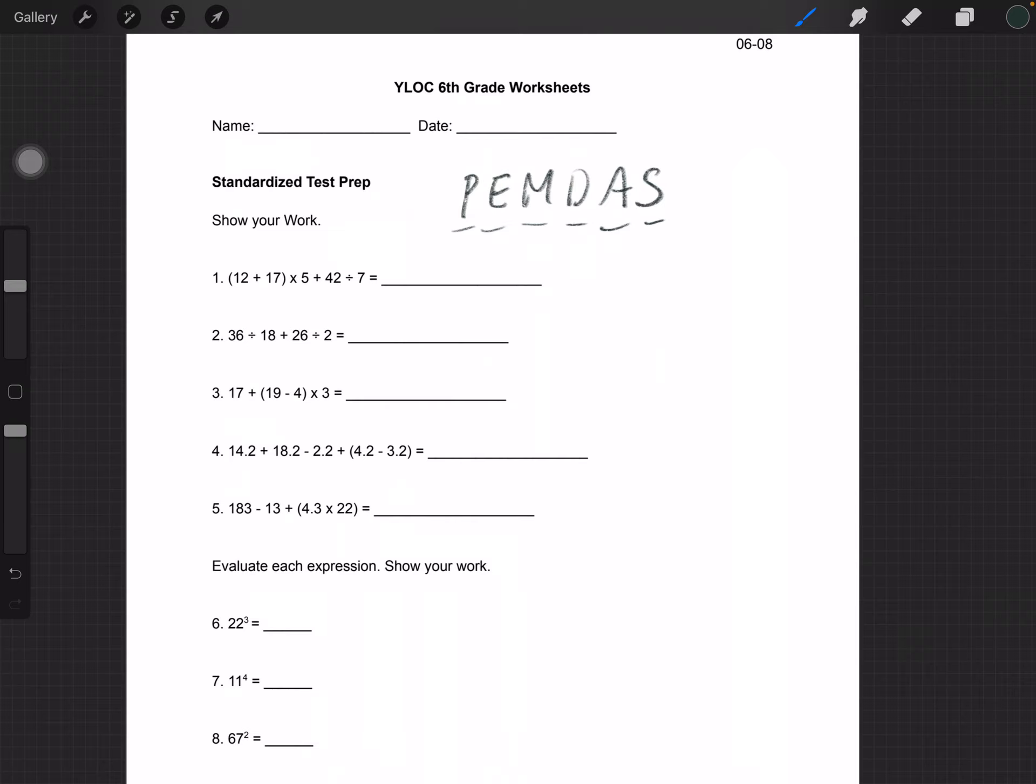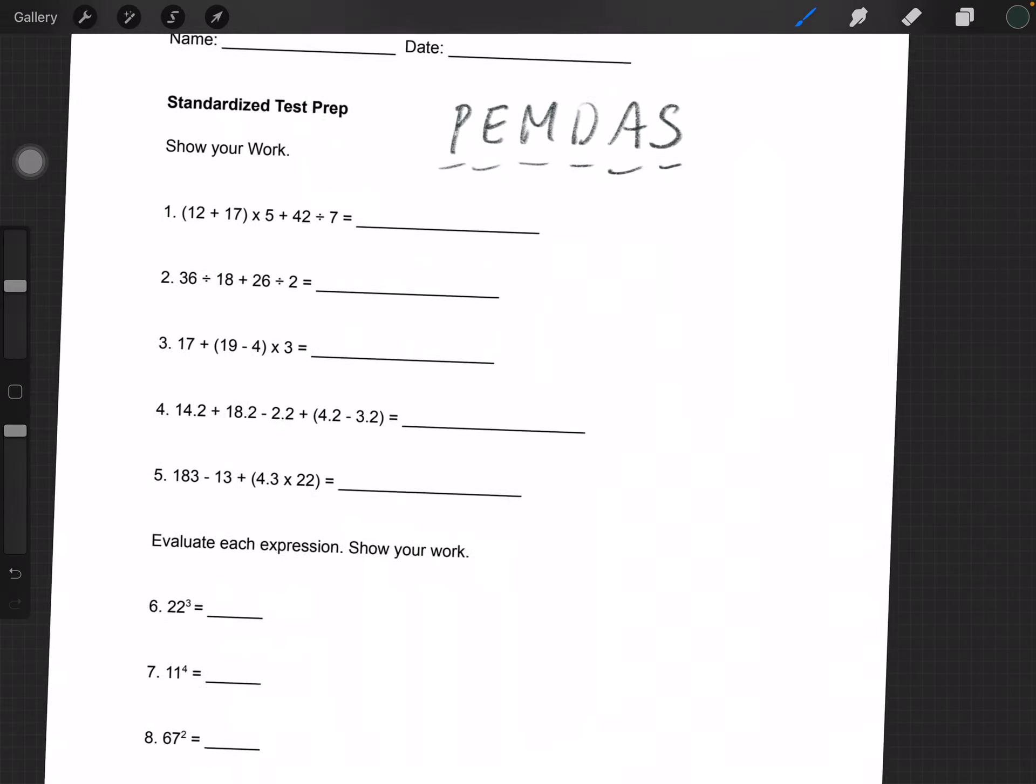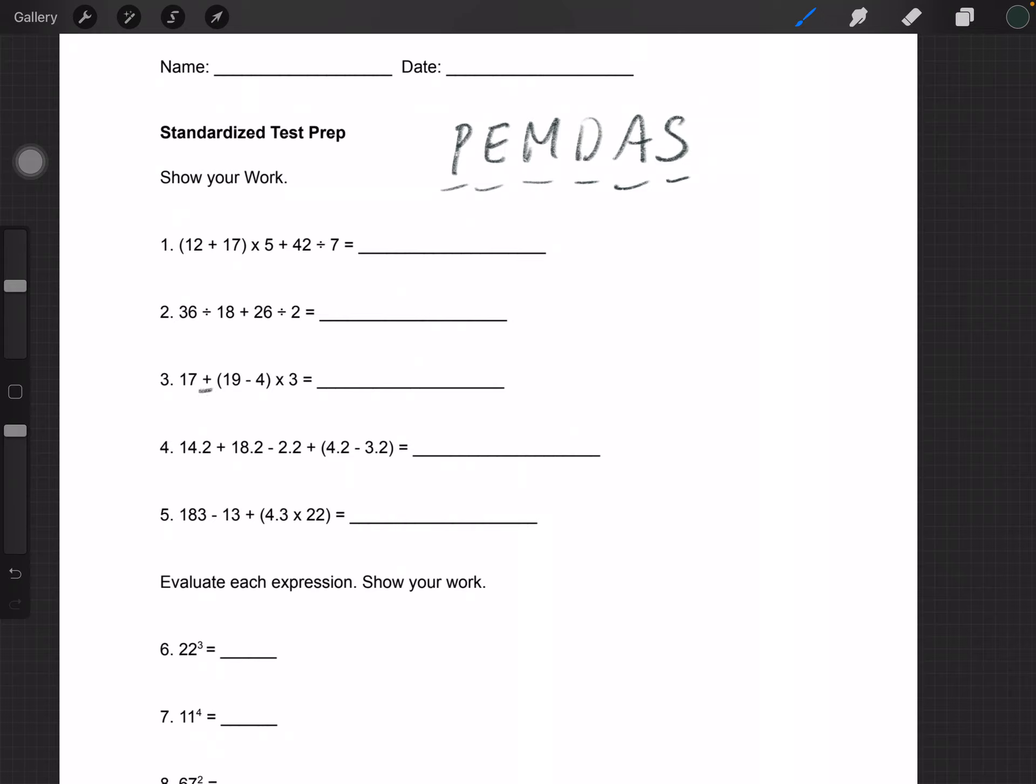Let's do one without division so it's a little easier for now. For number 3, we see you have addition, subtraction, multiplication, and also parentheses. You want to do what's in the parentheses first, so it becomes 17 + 19 - 4 = 15 × 3.